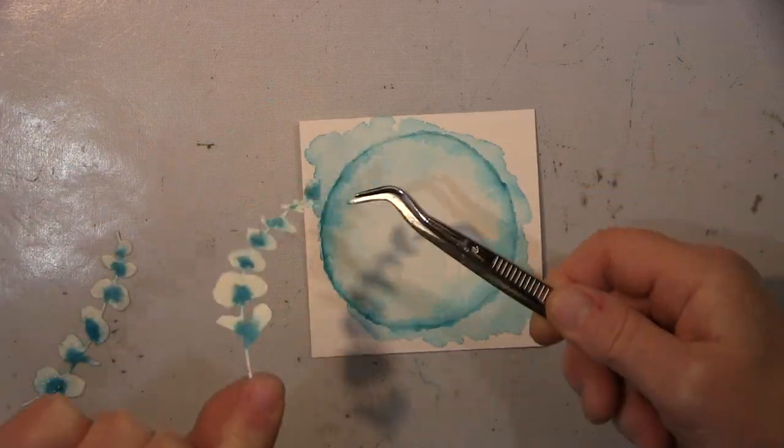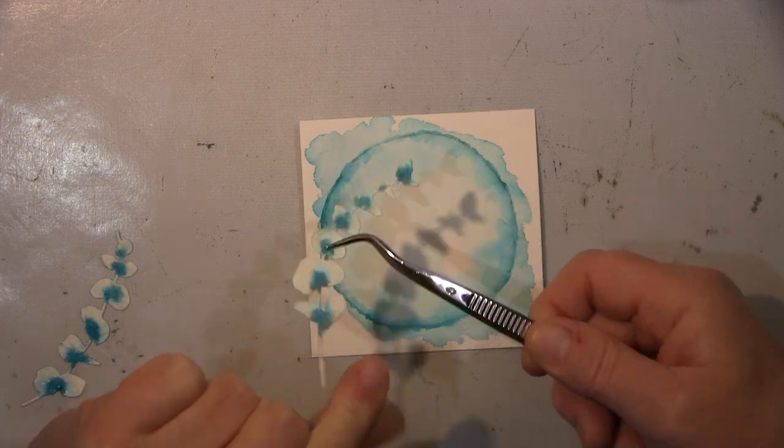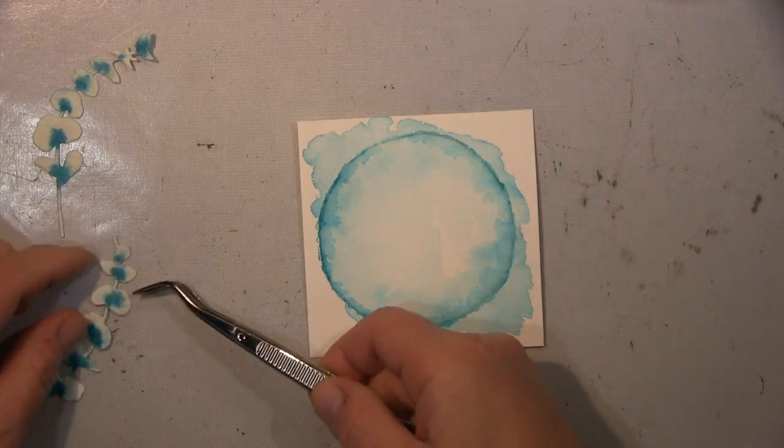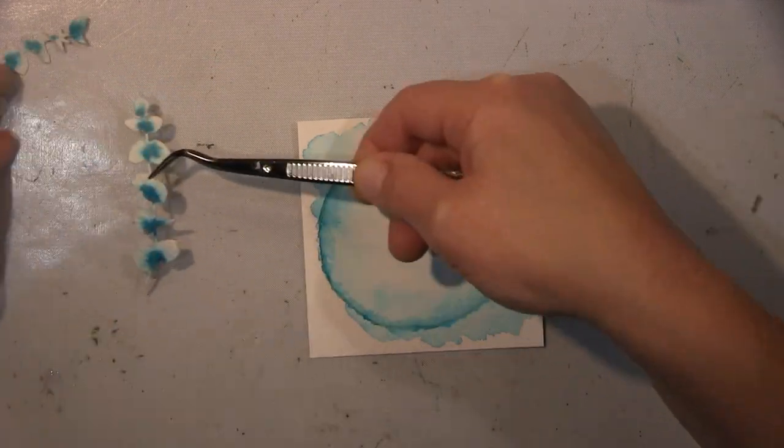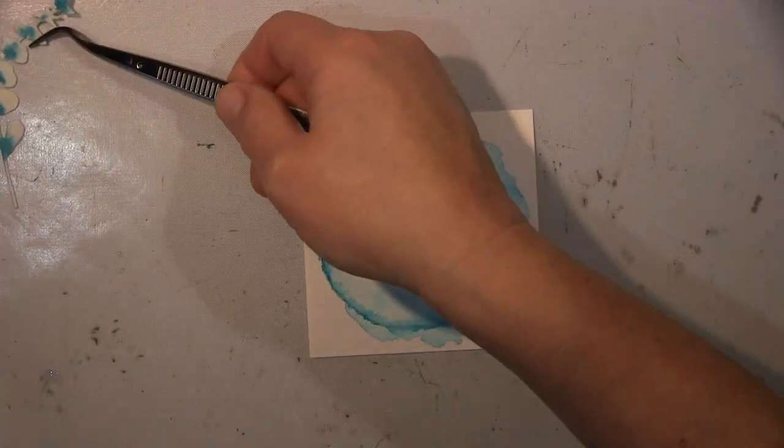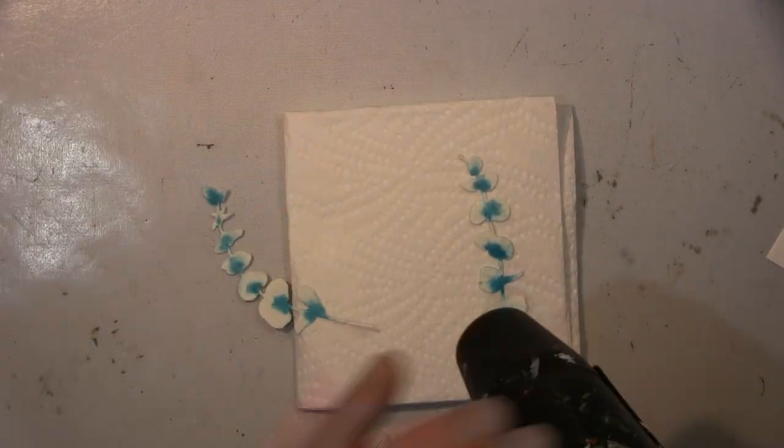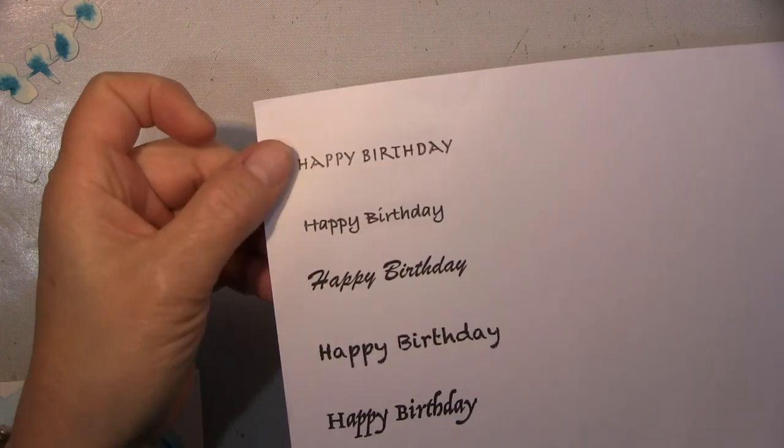Und hier gucke ich schon mal, inwieweit das passt. Die sind ja eigentlich gerade, wenn die die ausstanzt, aber wenn die nass sind, kann man die schön formen und das mache ich auch. Ich lege sie so hin, dass sie geformt trocknen und dann eben in dieser Form bleiben.